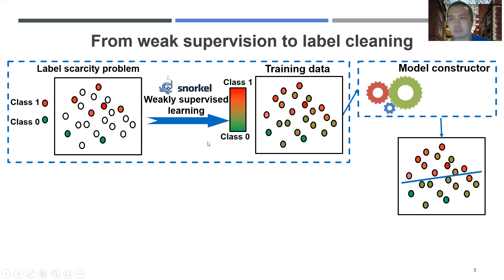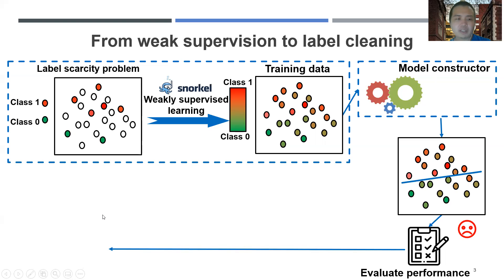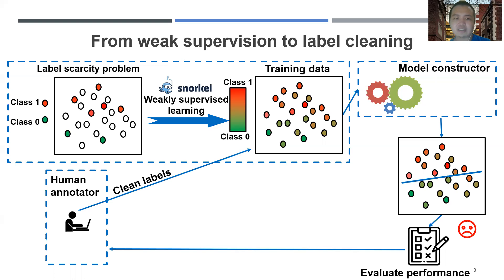After that, we can train a machine learning model by using all of those training samples in the model constructor. But sometimes the users may not be happy about the performance of the resulting model. Therefore, to improve the label quality, we can ask human annotators to clean the labels for some training samples with probabilistic labels. But we notice that sometimes human annotators can make mistakes, so to reduce such human annotation errors, we can have more than one human annotator such that we can aggregate the labels from those different annotators.